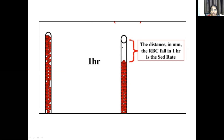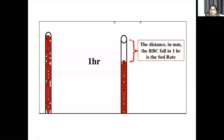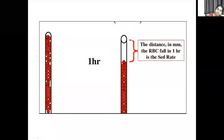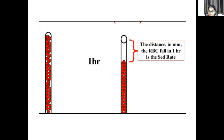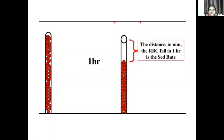After one hour, the RBC settle down to the bottom and the distance is measured in mm per hour — this is the erythrocyte sedimentation rate. The settling of RBC after one hour is measured using the calibrations from 1 to 200 mm, and the unit used is mm per hour.